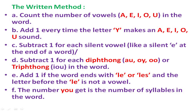Also in the Return Method, add one if the word ends with L-E or L-E-S and the letter before the L-E is not a vowel. The final number you get is the number of syllables in the word.